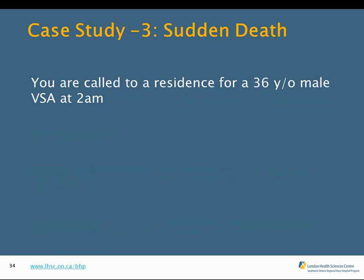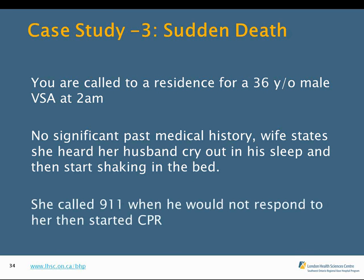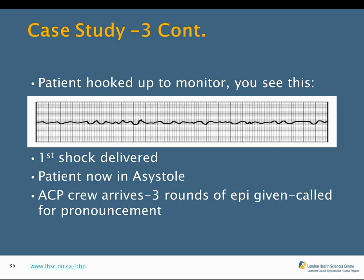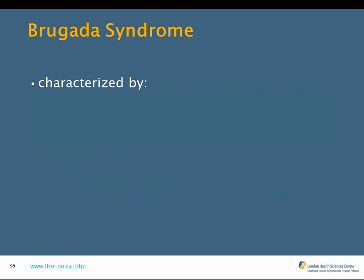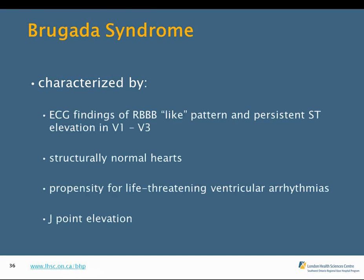Case Study 3: You are called to a residence for a 36-year-old male VSA at 2 a.m. with no significant past medical history. His wife heard him cry out in his sleep and then start shaking. She called 911, then started CPR. On arrival, the patient is in ventricular fibrillation. First shock was delivered and the patient became asystolic. The ACP crew arrived, three rounds of epinephrine were given, and pronouncement was called. This is an example of unrecognized Brugada syndrome — characterized by a right bundle branch block-like pattern and persistent ST elevation in V1 through V3 in structurally normal hearts, with a propensity for life-threatening ventricular arrhythmias.